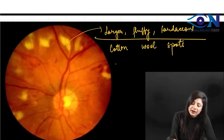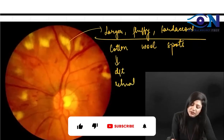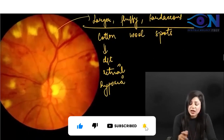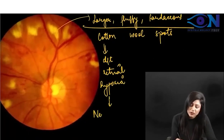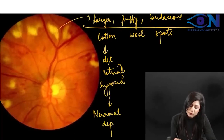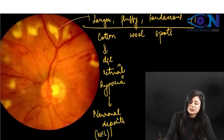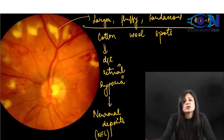Cotton wool spots occur due to retinal hypoxia. Because they are caused by hypoxia, they are neuronal deposits, and that is why they are present in the nerve fiber layer. These are usually present in hypertensive retinopathy, while hard exudates are present in diabetic retinopathy.